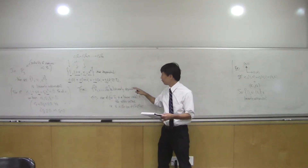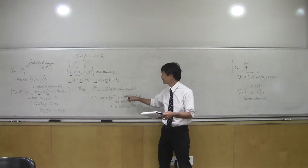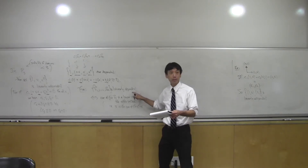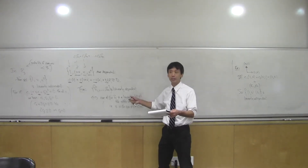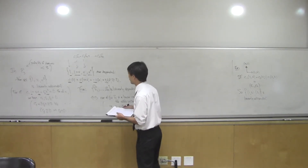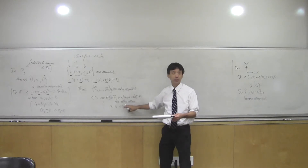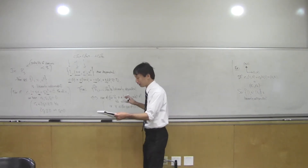So: linear dependence means one of the vectors is in the span of the other guys. Linear independence means no vector is in the span of the other vectors. That's another way of phrasing it — dependence means redundancy, independence means minimality.